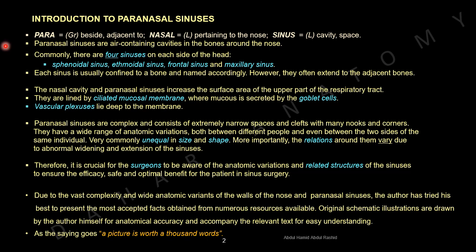Commonly, there are four sinuses on each side of the head. They are sphenoidal sinus, ethmoidal sinus, frontal sinus, and maxillary sinus. Each sinus is usually confined to a bone and named accordingly; however, they often extend to the adjacent bones.